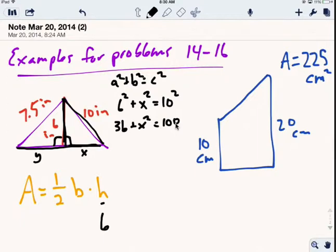Subtracting 36 from both sides, we get x squared equals 64. Taking the square root, x equals plus or minus 8, but we only need the positive value. So x equals 8.